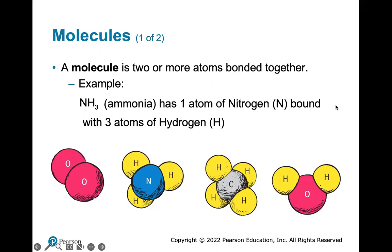A molecule is two or more atoms bonded together. They show some examples here: NH3 is ammonia — it has one nitrogen atom bound with three atoms of hydrogen. This is oxygen, you very often find it as a doublet. This is methane, carbon with four hydrogens around it, and this Mickey Mouse looking thing is water, H2O — two H's and an oxygen.